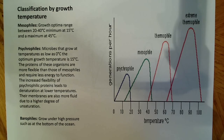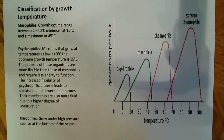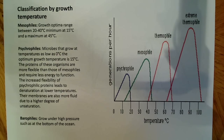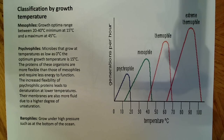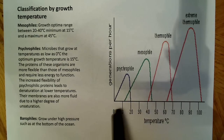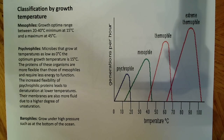Psychrophiles are microbes that grow best at low temperatures. They grow at temperatures as low as 0 degrees Celsius, and the optimum growth temperature is 15 degrees Celsius. The proteins of these organisms are more flexible, which makes sense because at colder temperatures proteins aren't going to work as well. Proteins are dynamic — they're enzymes, catalyzing reactions, and they need some movement. If they don't have that movement, they won't work properly. So psychrophile proteins need to be more flexible than those of mesophiles, which function in the 20 to 40 degree range.